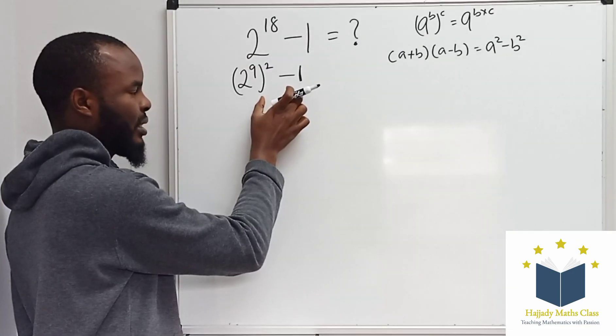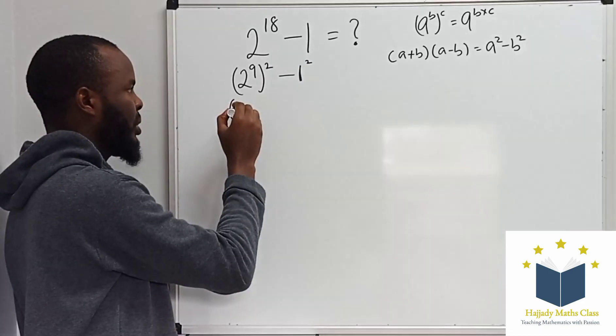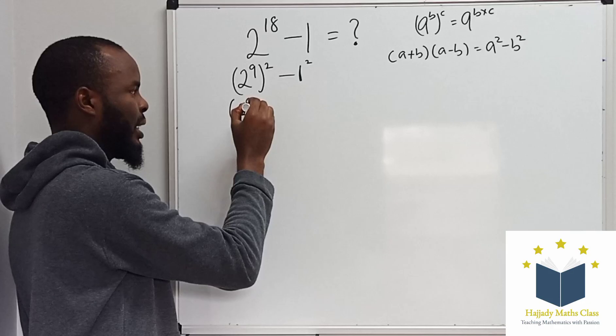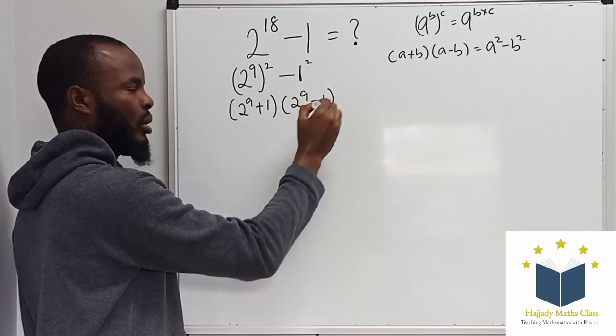So using the same rule here, it's like you having 1 squared. So it's going to be 2 to the power of 9 plus 1, times 2 to the power of 9 minus 1.